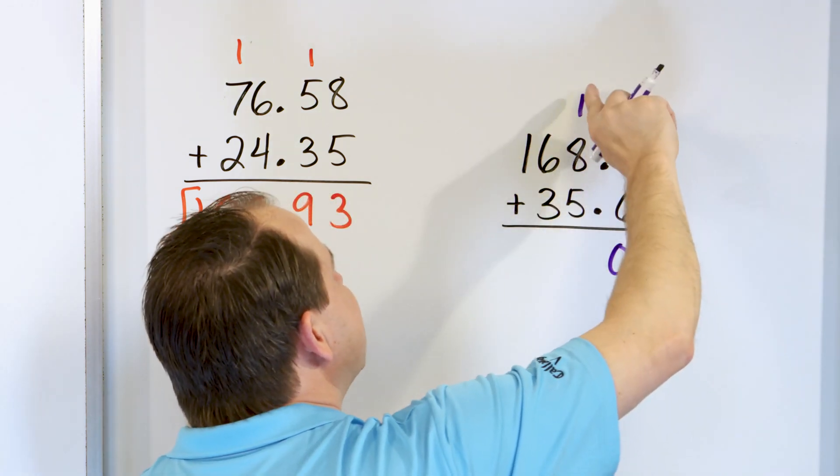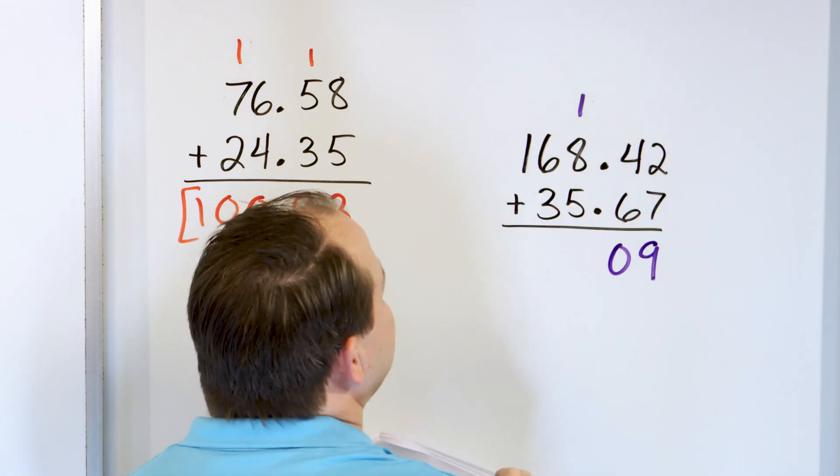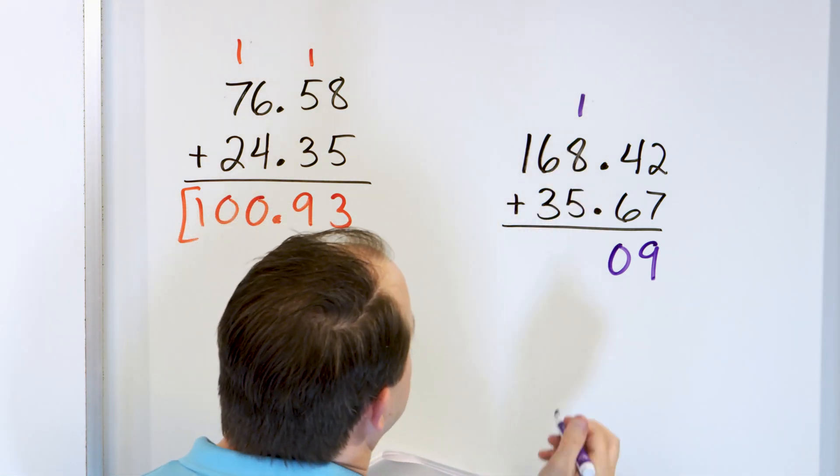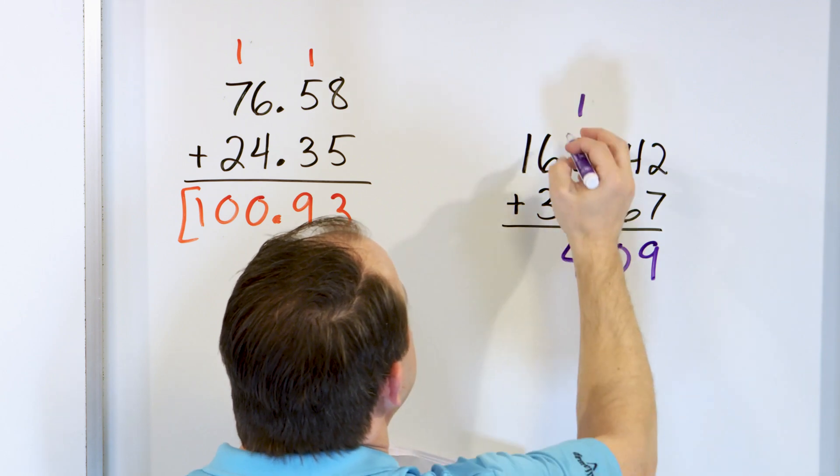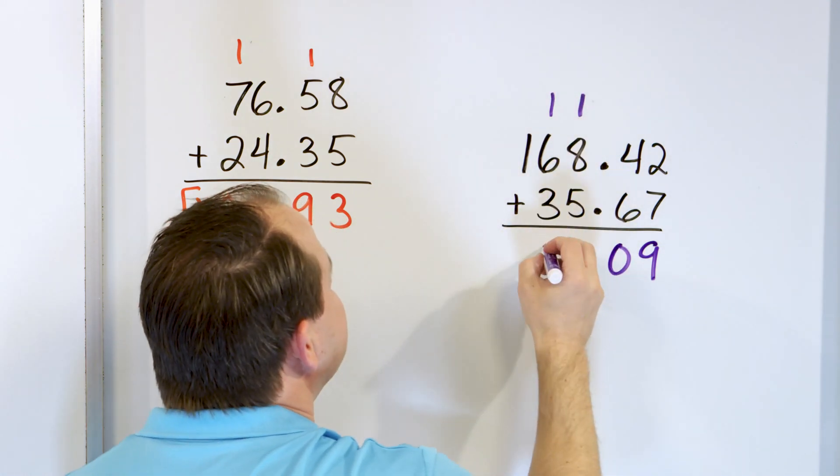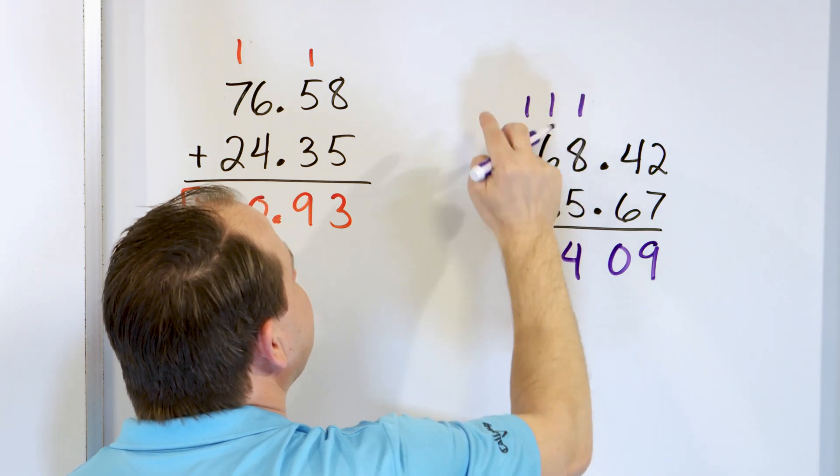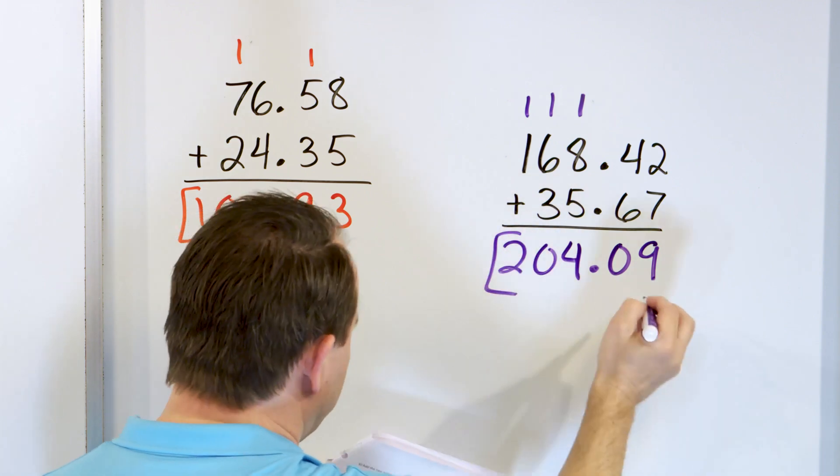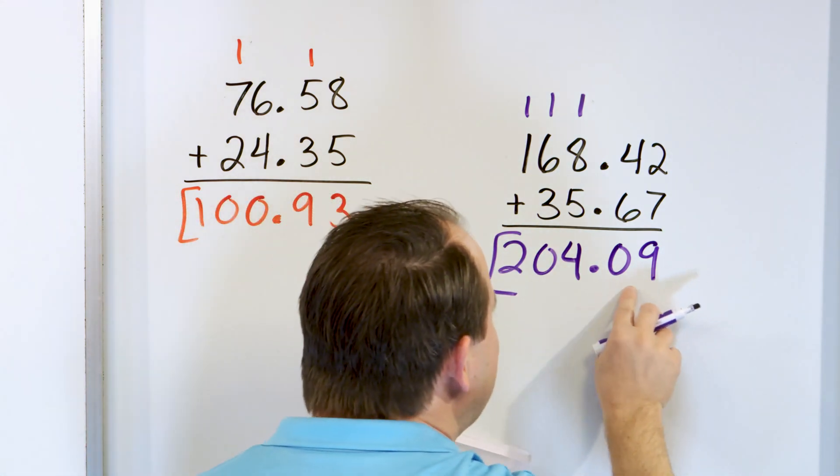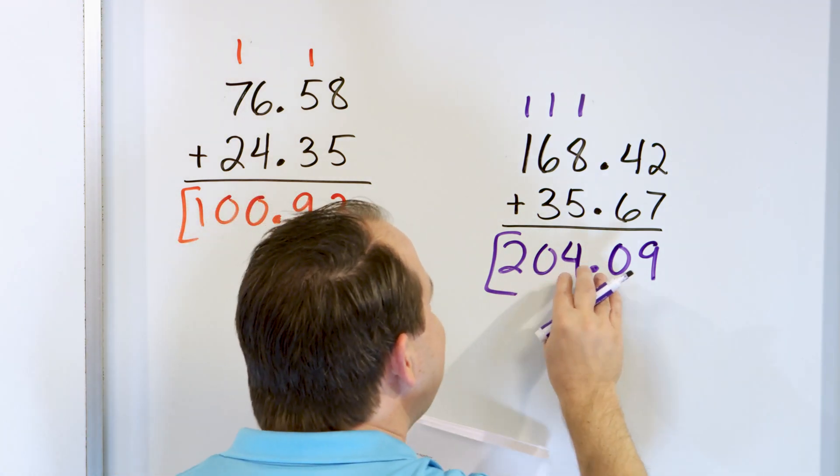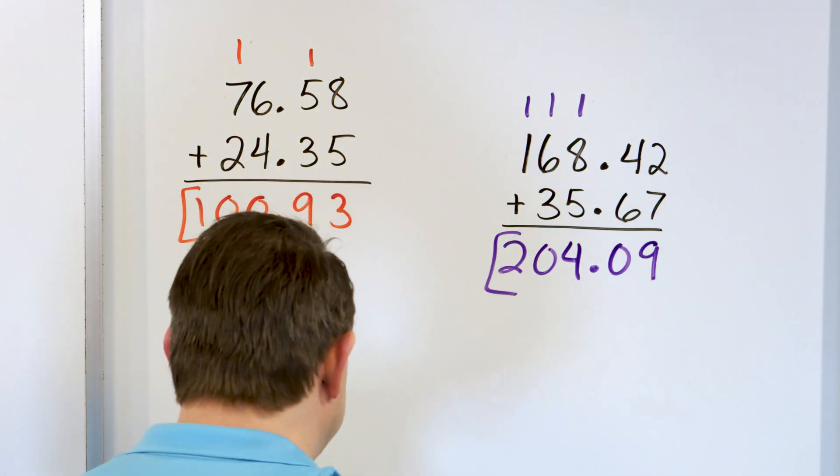Now, we have 8, then 9. 9 plus 5 is what? 14. 9 plus 5 is 14 because 10 plus 5 would be 15. So, 9 plus 5 has to be 14. Carry the 1. 6, 7, 8, 9, 10. Means I have a 0. Carry a 1. 1 plus 1 is 2. Decimal falls out. And so, the answer is 204.09. The .09 just means that I'm not too far past the 204. I'm very close to 204. I have a little tiny bit more than that, but that's it.